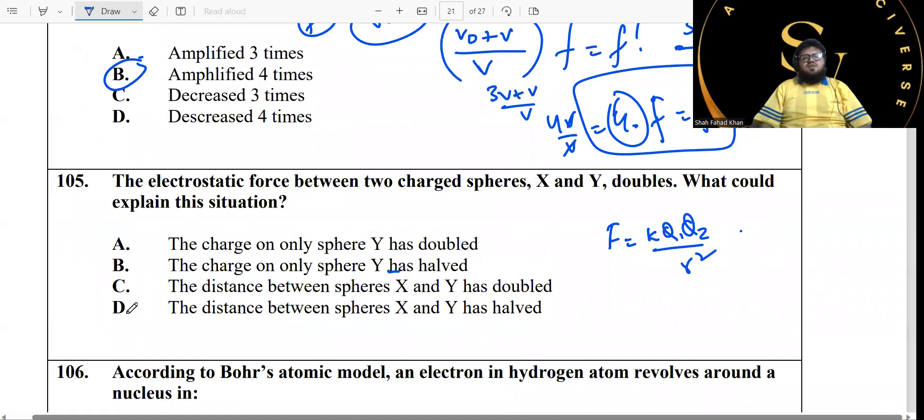The electrostatic force between two charged spheres, X and Y, doubles. What could explain this situation? Now, how can a charge actually double? If you just look at this formula, we're talking about the force actually. How can it double? Either you double one of these two charges, or you make this one over r squared over two. Only then can the force be doubled. So the charge on one sphere has doubled.